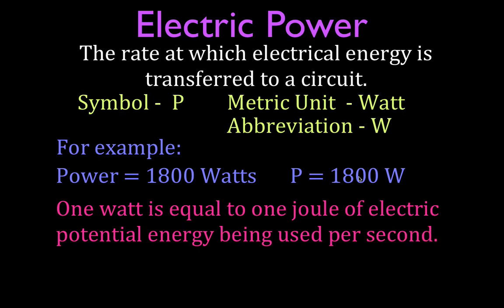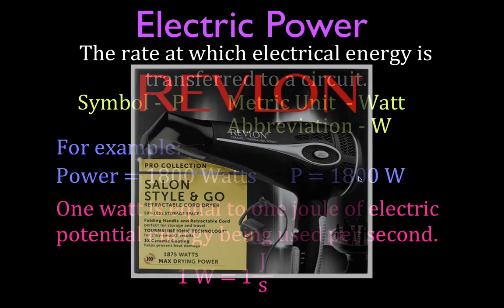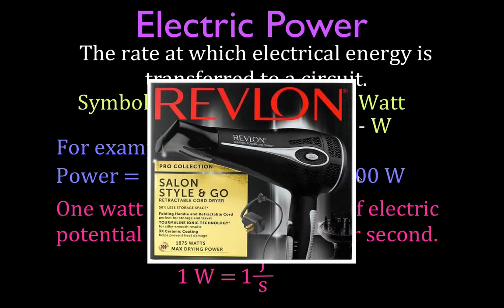One watt is equal to one joule of electric potential energy being converted every second. So we say that a watt is the abbreviation for a joule per second. For example, if you have a hair dryer, it's an 1875 watt hair dryer, it means that it is converting 1875 joules of energy per second into heat in this case.